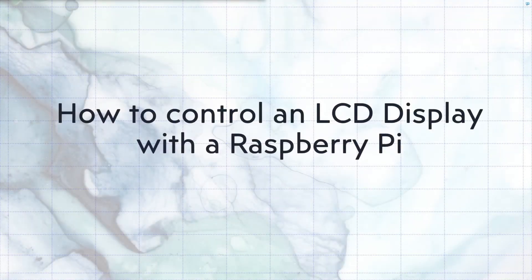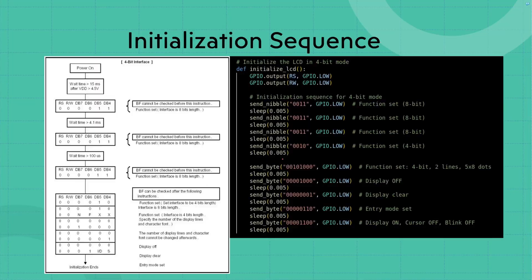Today we're going to be going over how to control an LCD display with a Raspberry Pi. Before we actually use the LCD display, we're going to have to initialize it. The first thing we're going to have to do is function set the actual LCD display.